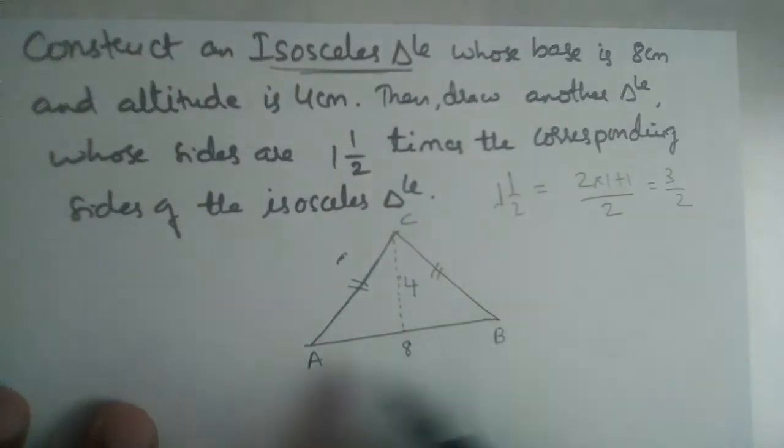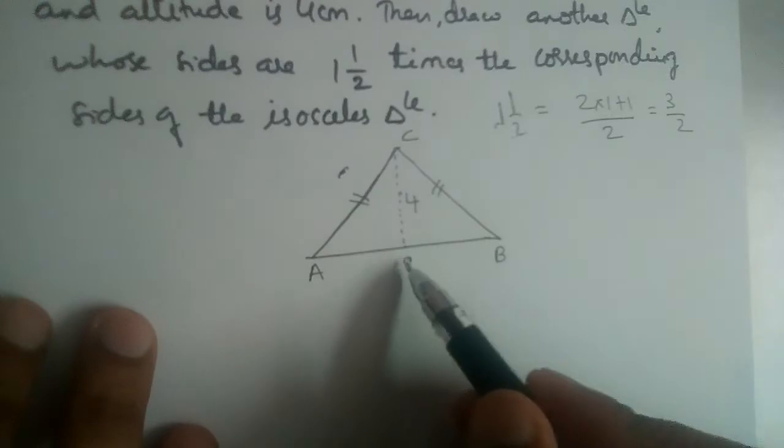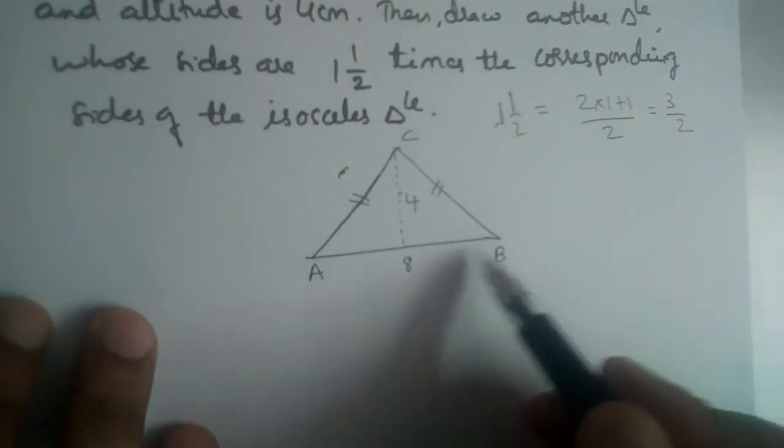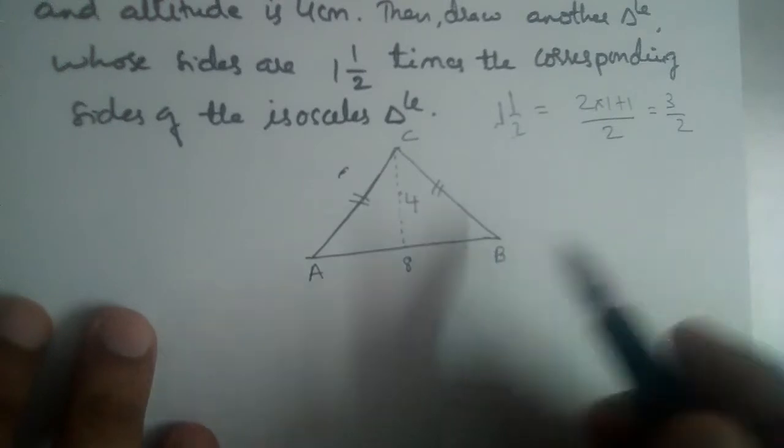So let us construct a triangle like this. What we will do is we will draw the base 8 cm and then we will draw perpendicular bisector to AB. Let us see here. Base is 8 cm first.